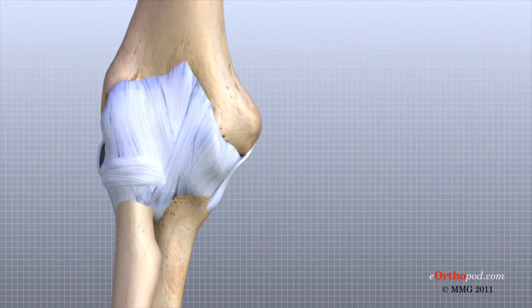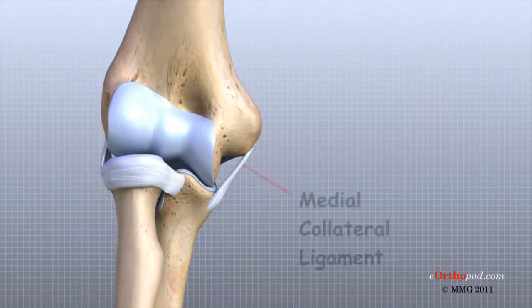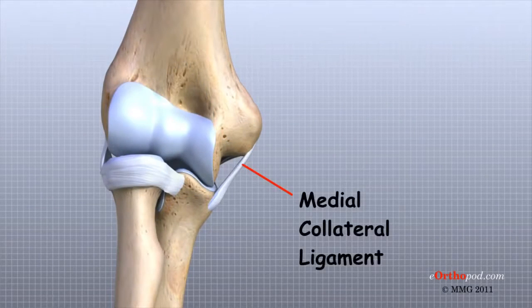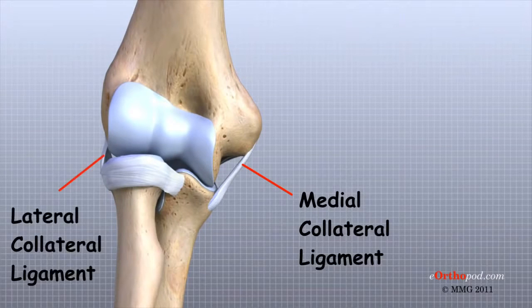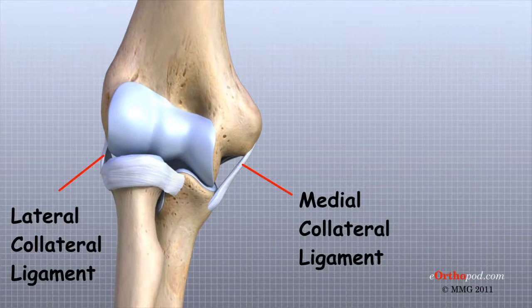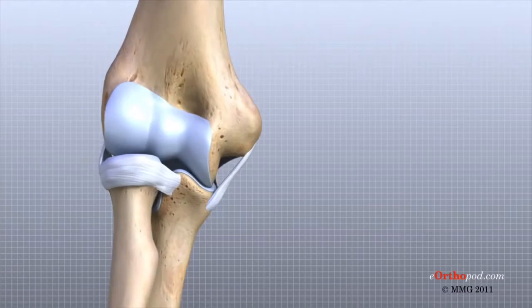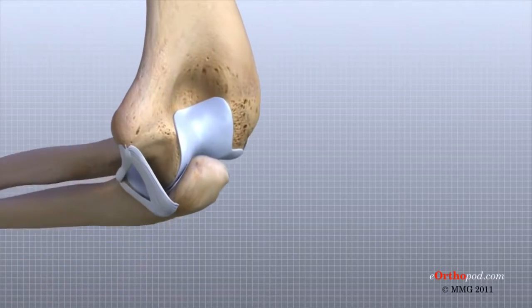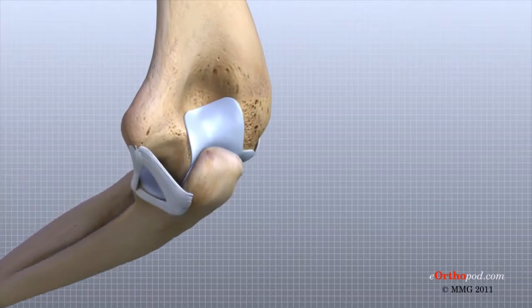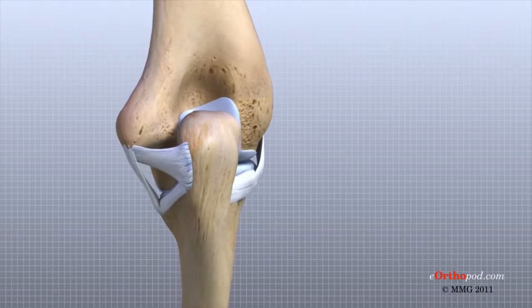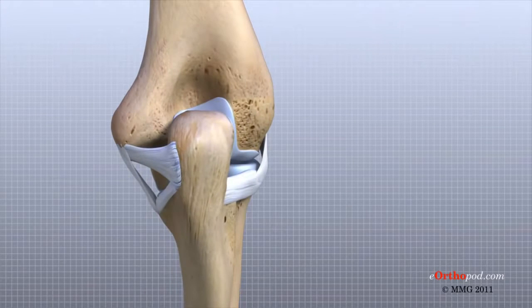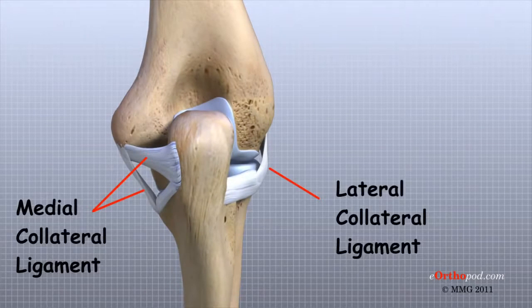In the elbow, two of the most important ligaments are the medial collateral ligament and the lateral collateral ligament. The medial collateral ligament is on the inside edge of the elbow. The lateral collateral ligament is on the outside edge. Together, these two ligaments connect the humerus to the ulna and keep it tightly in place as it slides through the groove at the end of the humerus. These ligaments are the main source of stability for the elbow.